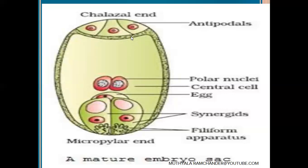In Oenothera embryo sac, antipodals are absent. In Peperomia embryo sac, six antipodals are present. In Plumbago, only a single antipodal is present. In Drusa, 11 antipodals are present. In Fritillaria, three antipodals are present and they are in a triploid condition. In Plumbago, the single antipodal also contains triploid nuclei.